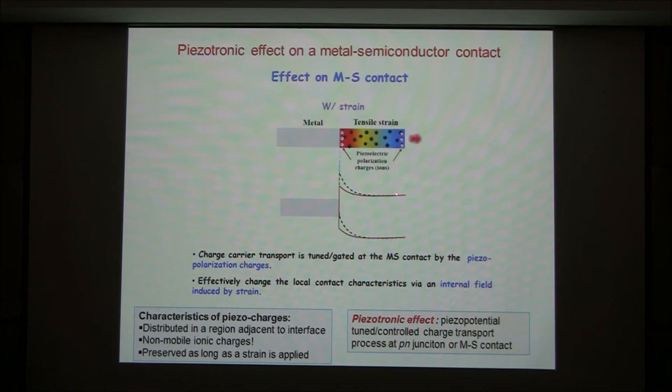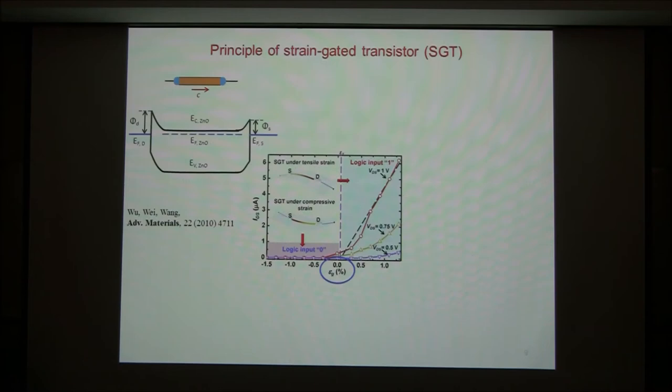Because it is exponential control — it's not a linear control. It can turn the device on and turn it off, simply by this polar charge at the interface. This is the fundamental of the piezoelectric effect for metal-semiconductor contact.